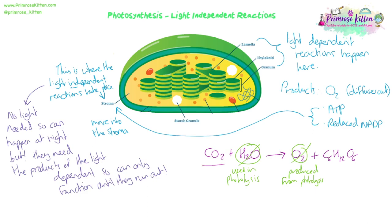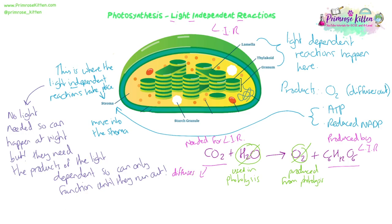What we've got left is carbon dioxide as a reactant and glucose as a product. So the light independent reaction is all about taking that carbon dioxide, which diffuses into the leaf through the stomata, into the cytoplasm of palisade cells, and then into the chloroplast. We're going to use that carbon dioxide to make glucose. The plant can then take that glucose and use it to make all the organic molecules it needs to survive - amino acids, lipids, nucleic acids, sugars, starch, cellulose, and so on.